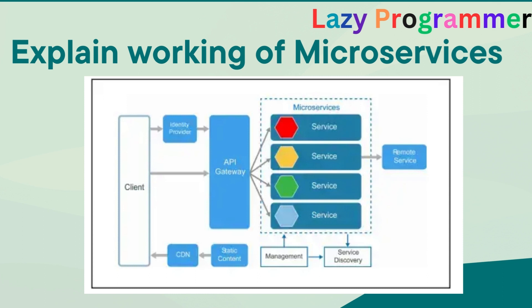The API gateway is responsible for routing the request to the correct service. Before that, it checks identity for authentication and authorization. After authenticating and authorizing the user, it routes the request to the correct microservice. After processing, microservices can interact with third-party remote services as well. Once the response is ready, it is sent back to the API gateway, which forwards it to the client. Additional components include CDN (content delivery network) for static content, and service discovery and management on top of the microservices, enabling them to interact with each other and manage service statuses.